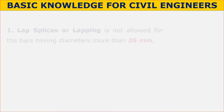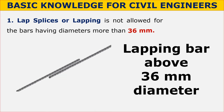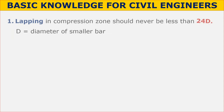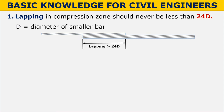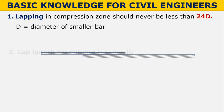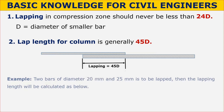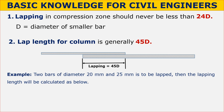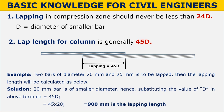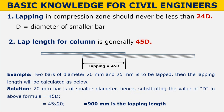Lap splice is not allowed for bars having a diameter more than 36 mm. Lapping in the compression zone shall never be less than 24 times d, where d is the diameter of the smaller bar. Lap length for a column is generally 45d. For example, if two bars of diameter 20 mm and 25 mm are to be lapped, the smaller diameter is 20 mm, so substituting in the formula 45d gives a lapping length of 900 mm.